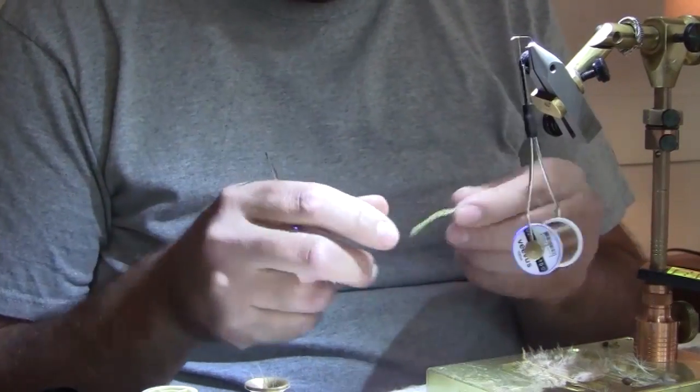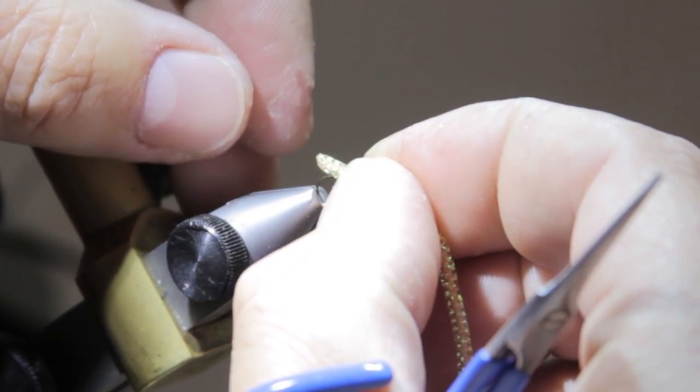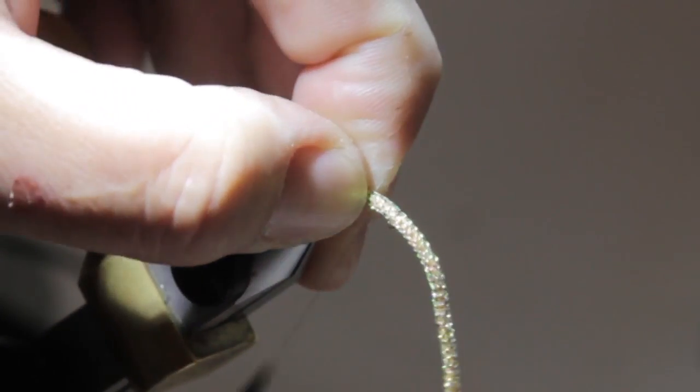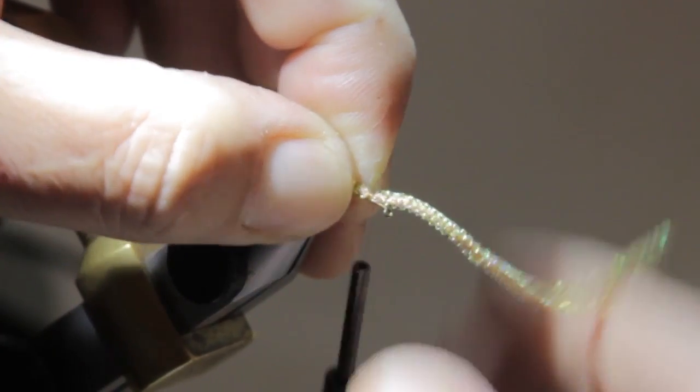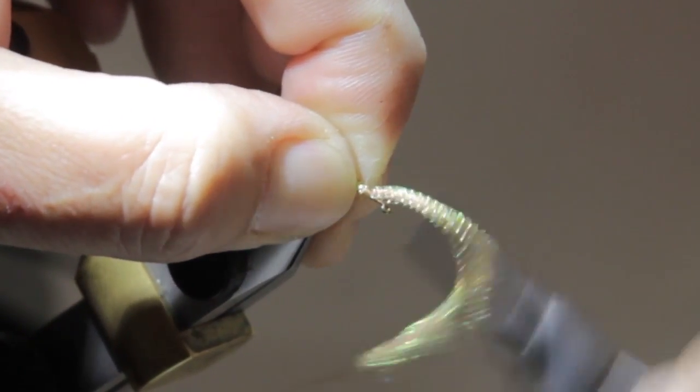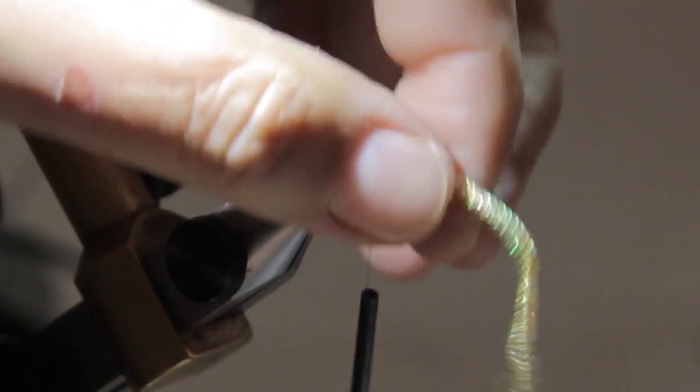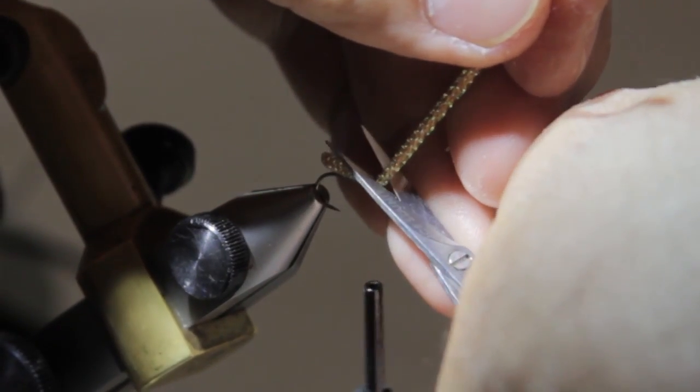We're going to start out by tying in some pearl core braid, just taking it back to the bend of the hook. This stuff will try to slip on you, so you want to really get the thread on it.